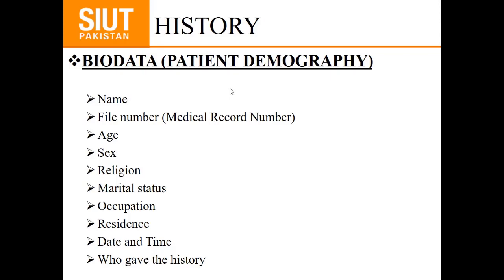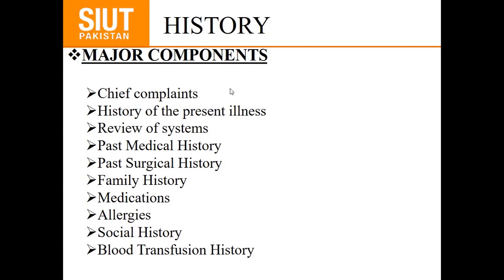The major components of the history begin with the chief complaint which the patient presents with, then history of the present illness with duration, review of systems, past medical history, past surgical history, family history, history of medications and drugs, history of allergies, social history, and blood transfusion history.